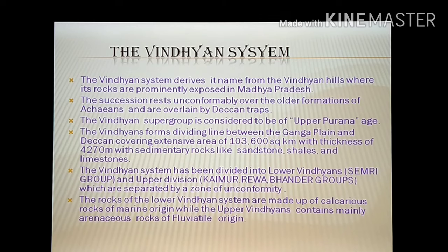The Vindhyan system derives its name from the Vindhyan Hills, where its rocks are prominently exposed in Madhya Pradesh. The succession rests unconformably over the older Archean formations and is overlaid by Deccan Traps. The Vindhyan Supergroup is considered to be of upper Purana age. It forms the dividing line between the Ganga Plain and the Deccan, covering an extensive area of 1,600,000 square kilometers and approximately 4,270 meters thick, comprising sandstone, shales, and limestones.